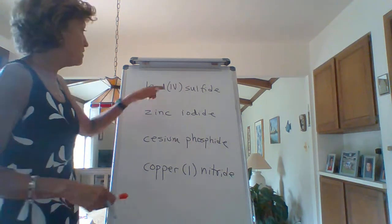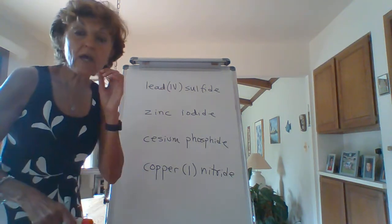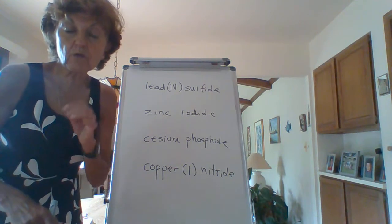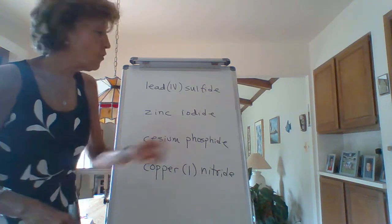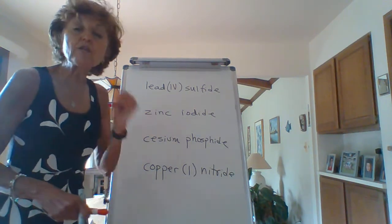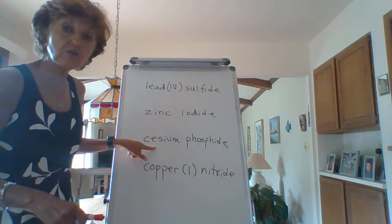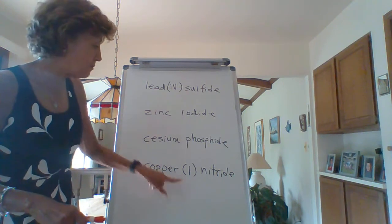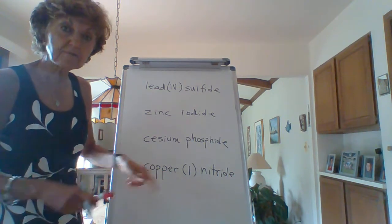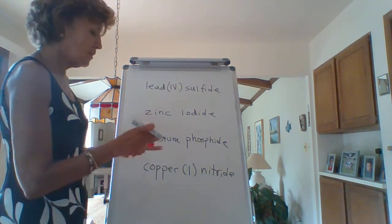All right. So the one, this has a, oh, and by the way, you can never, ever, ever put a Roman numeral in the formula. You only put it in the name and you never, ever, ever put a Roman numeral in the name of a fixed charge metal. You only put it in the name of a variable charge metal.